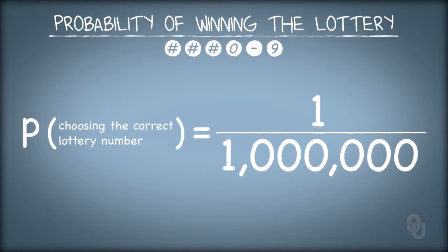The classical view of probability is what we need to find the probability of winning the lottery because we know exactly how many ways that winning the lottery can occur and we know how many possibilities there are in picking a lottery ticket.